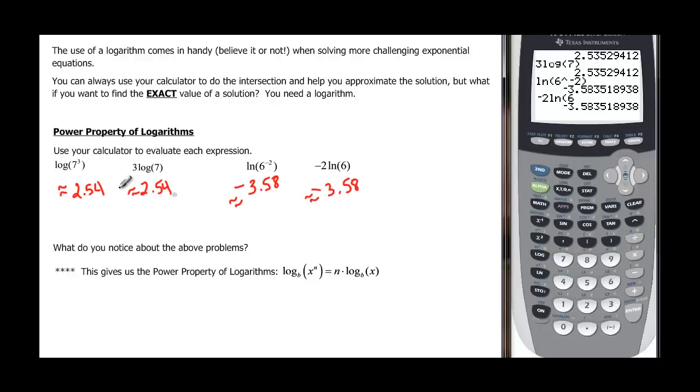So what do we notice? We notice that in this first two, they both had logs, they both had sevens, and they both had threes. It's just the three that changed. The three was in the exponent over here, and it was a coefficient in the second choice. Same thing happened over here with this natural log. We had negative 2 as an exponent in the first one, and then that negative 2 is our coefficient, and now our 6 inside our parenthesis has no exponent on it. It looks like the exponent went in front of the log, which is exactly what the power property is.